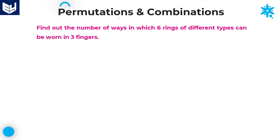Hi everyone, welcome to the session. In this session I am continuing the problems related to permutations and combinations. In the last sessions we already discussed a few problems related to P and C. Now let's continue. The first question given in this session: find out the number of ways in which six rings of different types can be worn on three fingers.